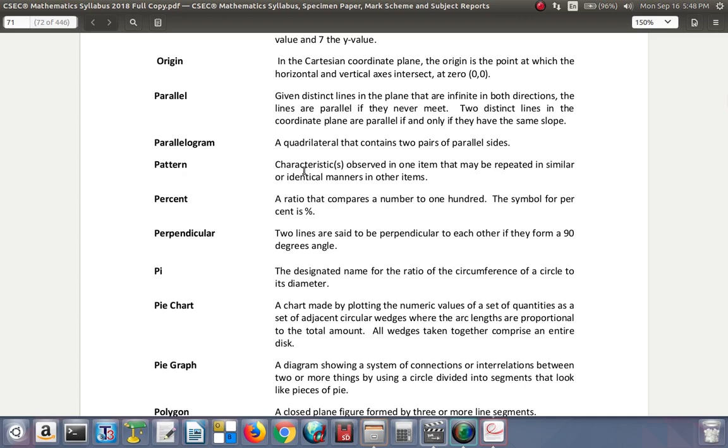Pattern. Characteristics observed in one item that may be repeated in similar or identical manner in other items. Percent. A ratio that compares a number to 100. The symbol for percent, and you see it there. So per means out of, cent means 100, so it's out of 100.